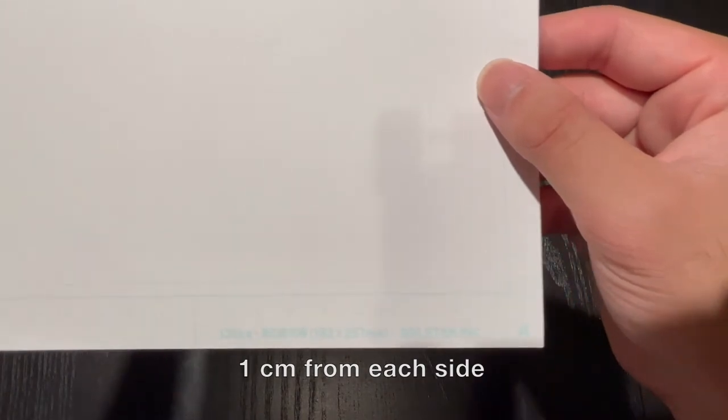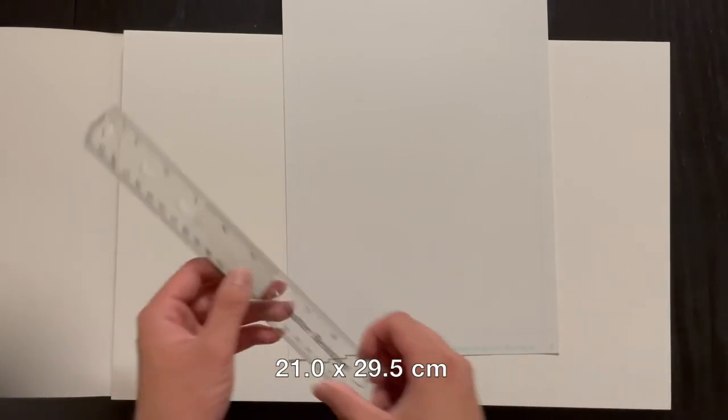But ultimately we need the single page to find the dimensions needed for the double page. And this paper is about 21 centimeters in width and 29 and a half centimeters in length.